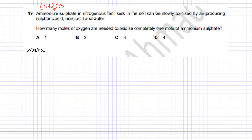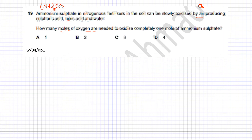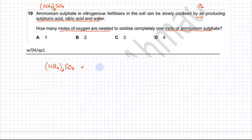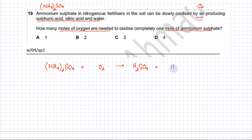Remember, the only reactive component in air is O2, so during the oxidation process O2 is the reactant. The products produced are sulfuric acid (H2SO4), nitric acid (HNO3), and water (H2O). The question asks how many moles of oxygen are needed to completely oxidize 1 mole of ammonium sulfate, so we keep ammonium sulfate at 1 mole and construct the equation: (NH4)2SO4 + O2 → H2SO4 + HNO3 + H2O.